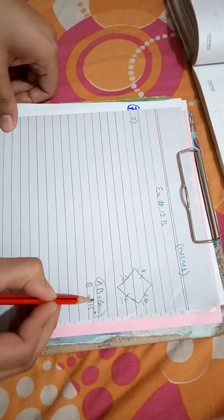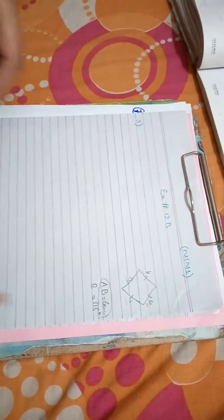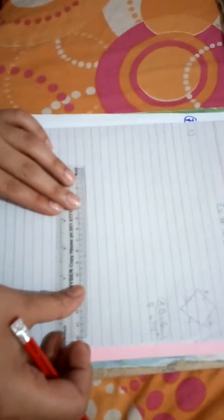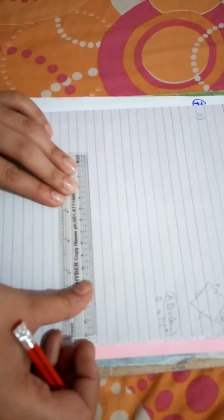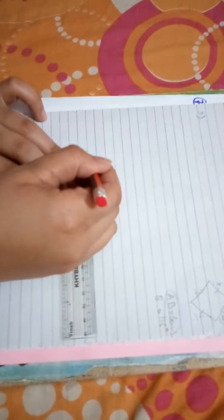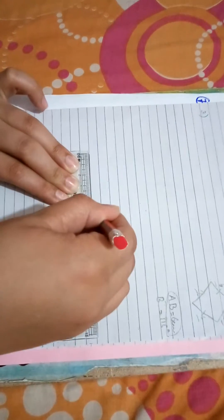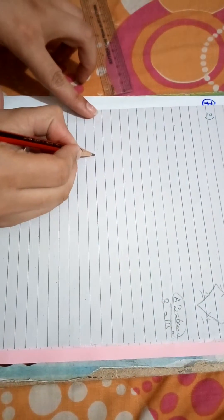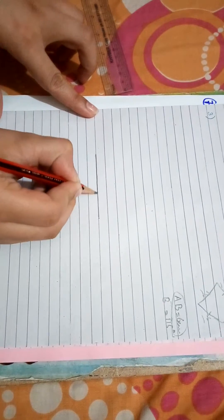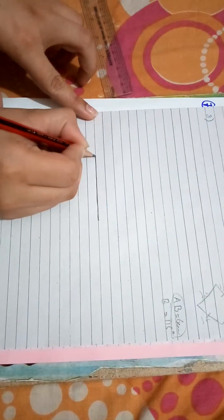First of all, draw a line segment of length 6 centimeters. It is visible.